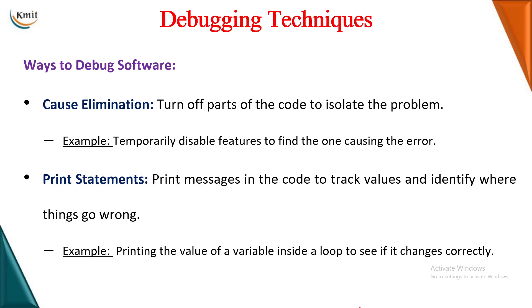Cause elimination is where you turn off parts of the code to find which part causes the error. For example, if payment fails, you temporarily disable the payment feature to see if the error is somewhere else. Print statements involve adding print messages to the code to check if values are correctly entered and where exactly things go wrong — for example, printing a variable inside a loop to check whether iterations are happening correctly.